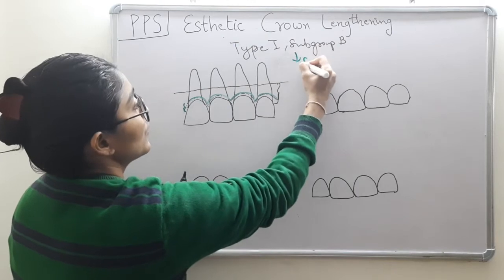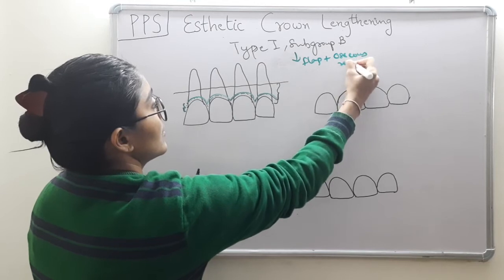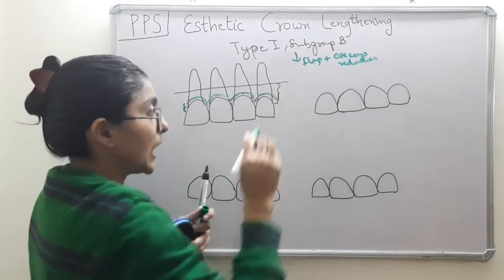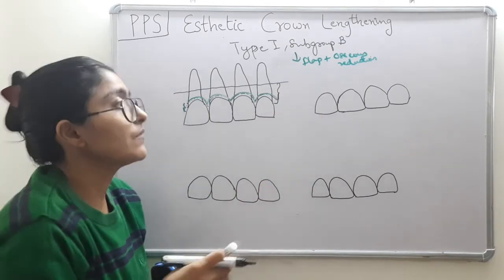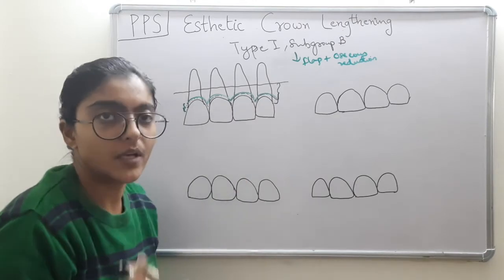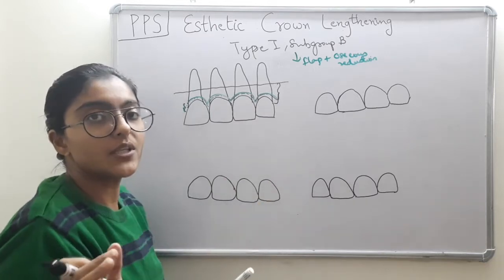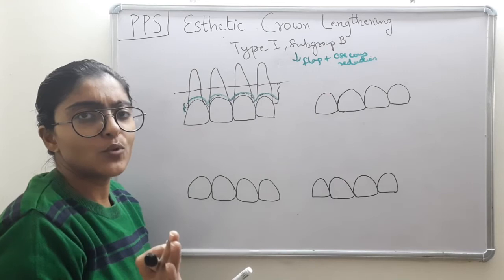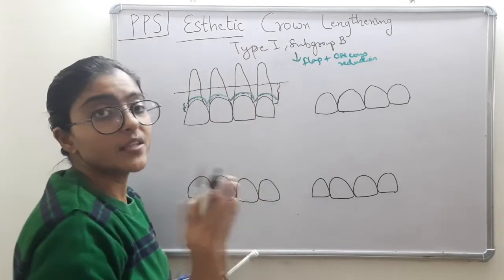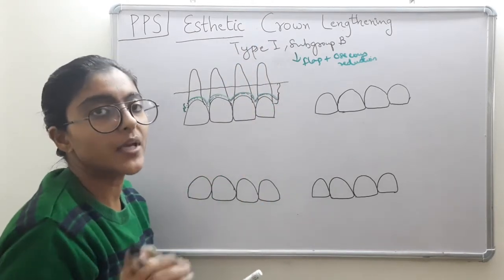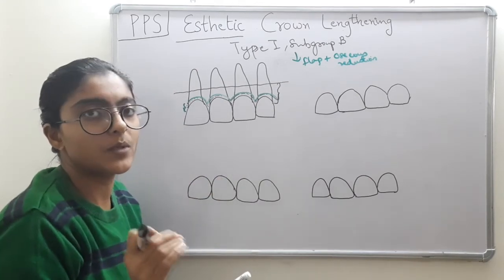The treatment plan for type 1 subgroup B is flap with osseous reduction. Now listen carefully — this is not going to be an ordinary flap. We apply the principles of periodontal flap surgery, but it is a combination technique. This is not a simple full-thickness mucoperiosteal flap. Please keep in mind we are performing aesthetic crown lengthening, not treating periodontal pockets or disease.